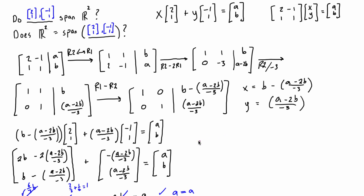If you were answering this on a test, you could have stopped at the RREF step and said yes, they span R2. But it's nice to verify and also think about it graphically. Because this is R2, we can plot it and see that there is some scaled-up and scaled-down combination of these two vectors that you can use via vector addition to get to any possible point in the space — for example, stretching the blue vector and adding a scaled green vector to reach a target point.